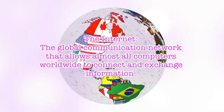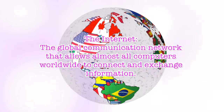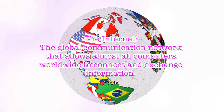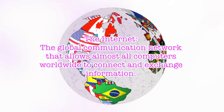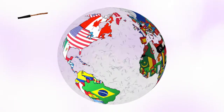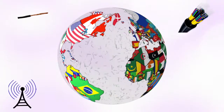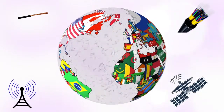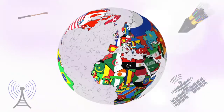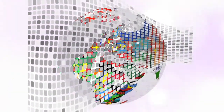The Internet is a collection of standalone computers, and also computer networks in companies, schools, colleges, and more, all loosely linked together. The connections between the computers are a mixture of old-fashioned copper cables, fiber optic cables, wireless radio connections, and satellite links. The Internet has one simple job: to move computerized information, also known as data, from one place to another.